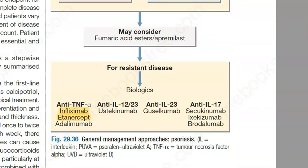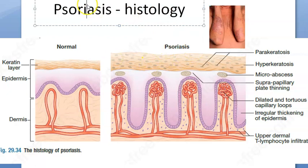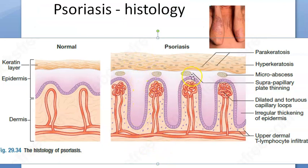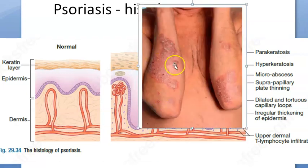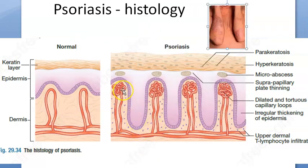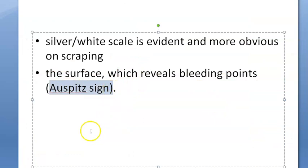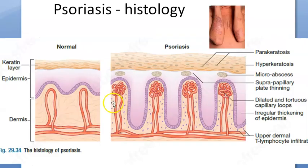In summary: psoriasis histology shows hyperproliferation of keratinocytes, parakeratosis, hyperkeratosis, and nuclei retained in the keratin layer. You can see how the vessels have become tortuous. When you try to remove the scales there will be bleeding spots because of these tortuous vessels — that is called Auspitz sign. When you scrape the surface you will see bleeding points; that's Auspitz sign, which you can understand from this histology.